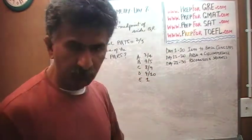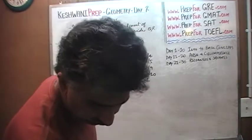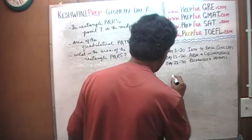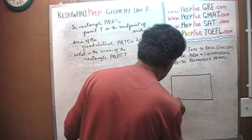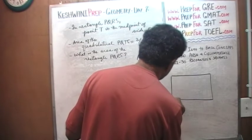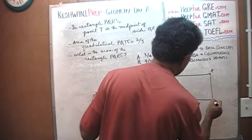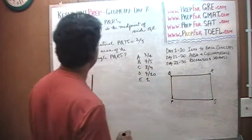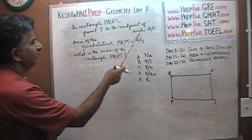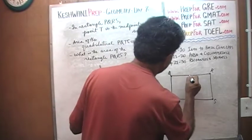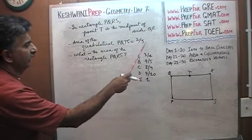The problem is already on the blackboard. I am going to read it to you. In a rectangle PQRS, we have a rectangle. In a rectangle PQRS, point T is the midpoint of QR. There is the QR. Point T is the midpoint of side QR.